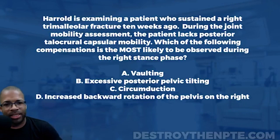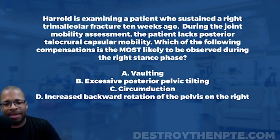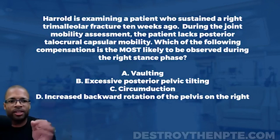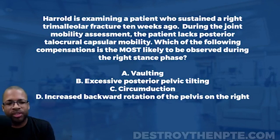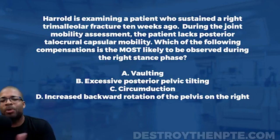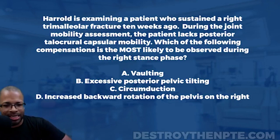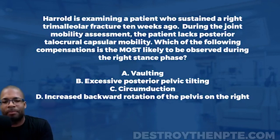For this week's Challenge Wednesday, we have our physical therapist Harold, who is examining a patient that sustained a right trimalleolar fracture 10 weeks ago. During the joint mobility assessment, the patient lacks posterior talocalcaneal capsular mobility. Which of the following compensations is most likely to be observed during the right stance phase? Options are: A) vaulting, B) excessive posterior pelvic tilting, C) circumduction, and D) increased backward rotation of the pelvis on the right.